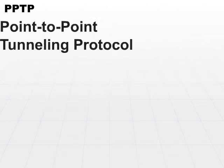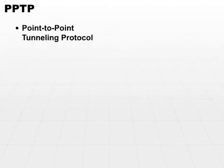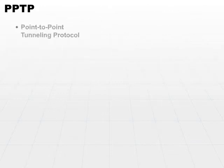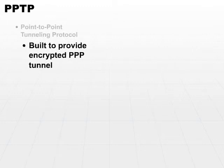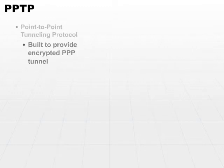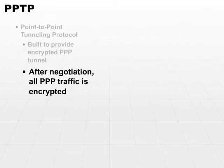There are several different VPN protocols that are commonly in use. First off, PPTP, Point-to-Point Tunneling Protocol. It's built to provide encryption over a PPP tunnel. So it uses basic PPP, and after the point-to-point tunnel is built, after the basic negotiation, all PPP traffic is encrypted.